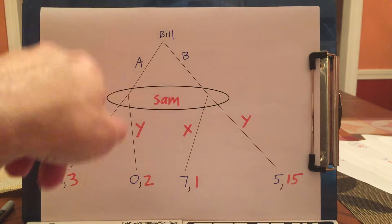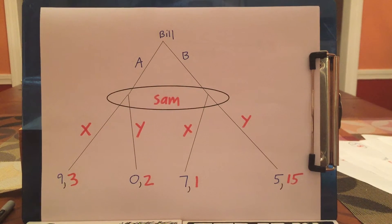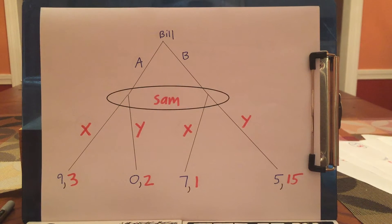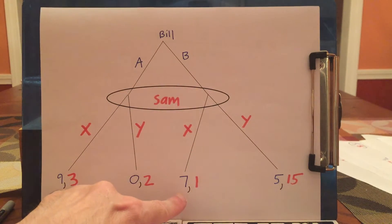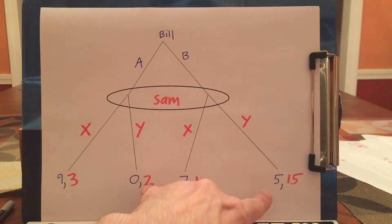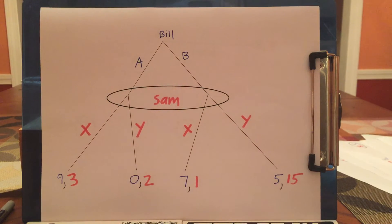Bill will know that Sam can't condition his move based on what Bill did. So if Sam's going to pick X, he'll pick X regardless of whether Bill picks A or B. And if Sam's going to pick Y, Sam will pick Y regardless of whether Bill picks A or B. So if Sam's going to pick X, Bill would rather pick A because 9 is greater than 7. And if Sam is going to pick Y, Bill would rather pick B because 5 is greater than 0. So Bill doesn't know what he wants to do until he can figure out what Sam's going to do.